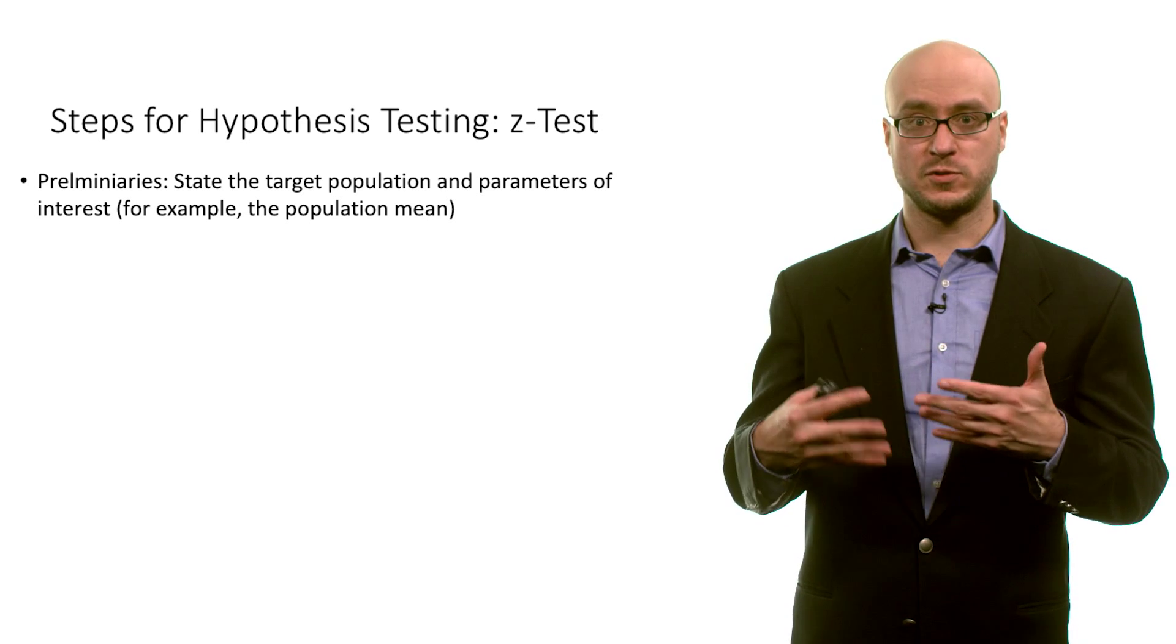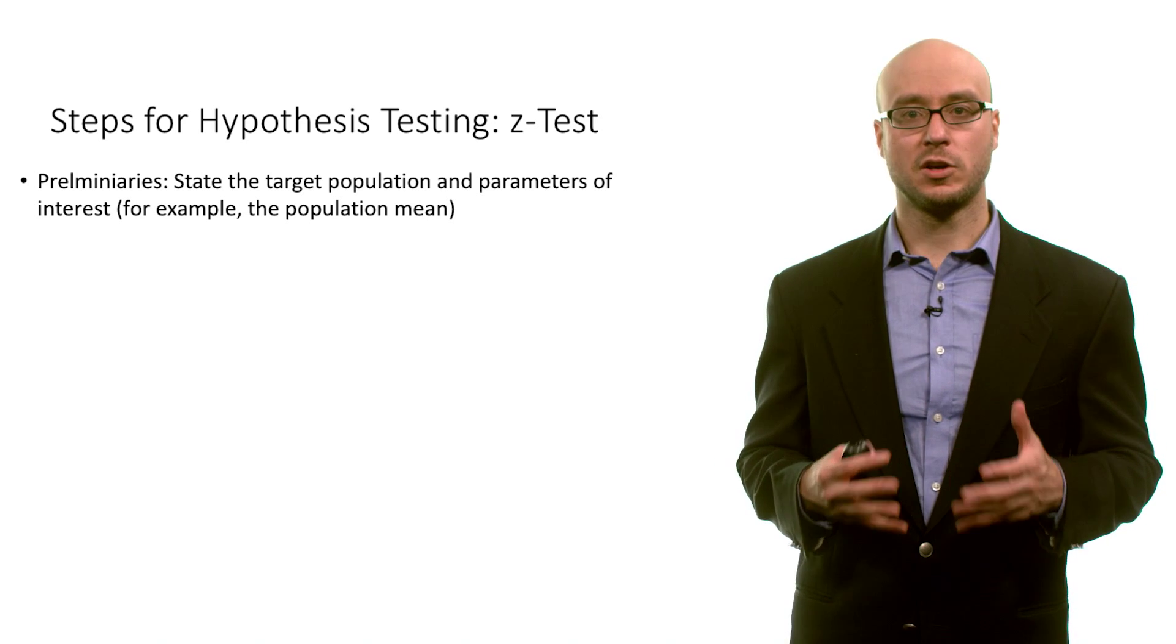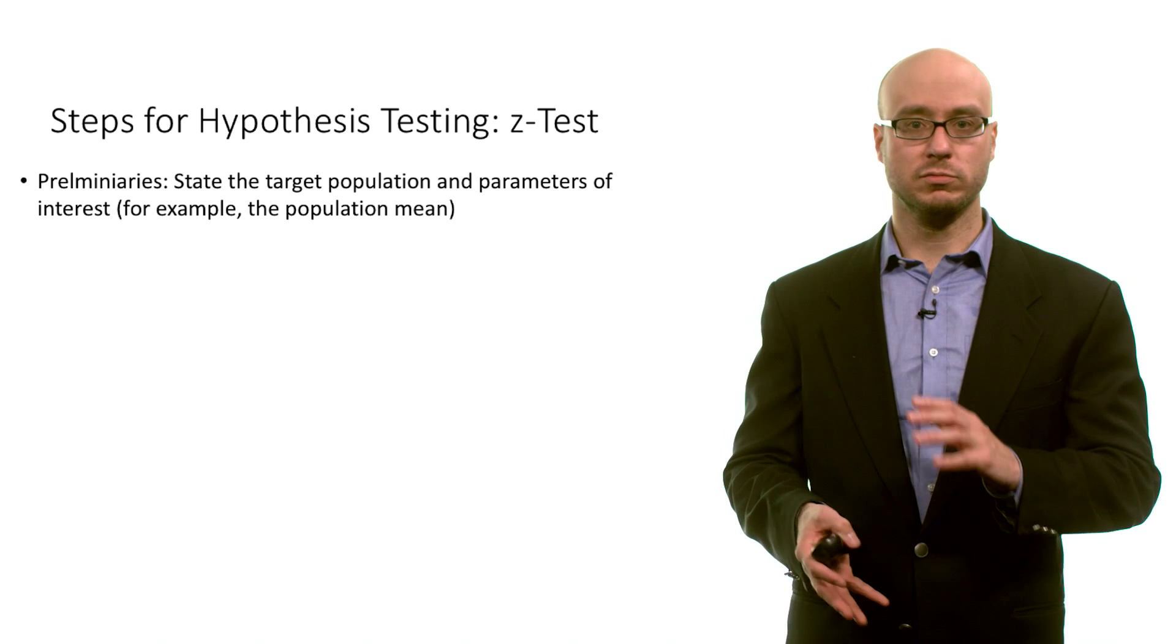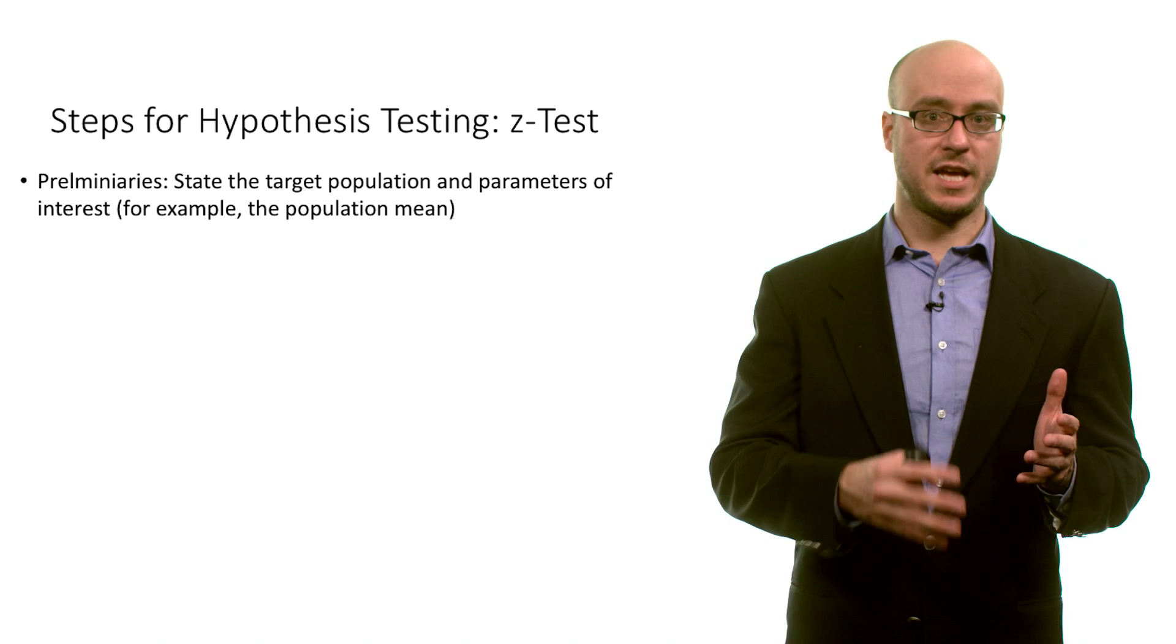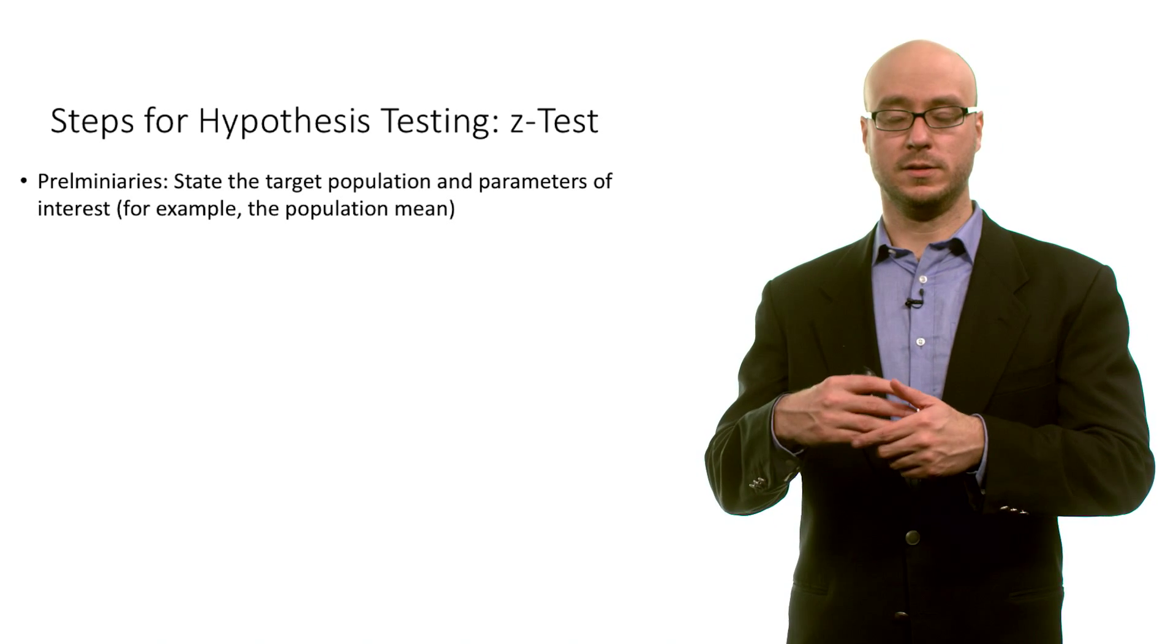First of all, the preliminaries: you should state the target population. Are you interested in generalizing to the population of the United States or maybe all beers brewed in a particular week? State your target population. And then state your parameters of interest. Are you actually interested in the population mean? Because maybe you're actually interested in some other quantity of the population.